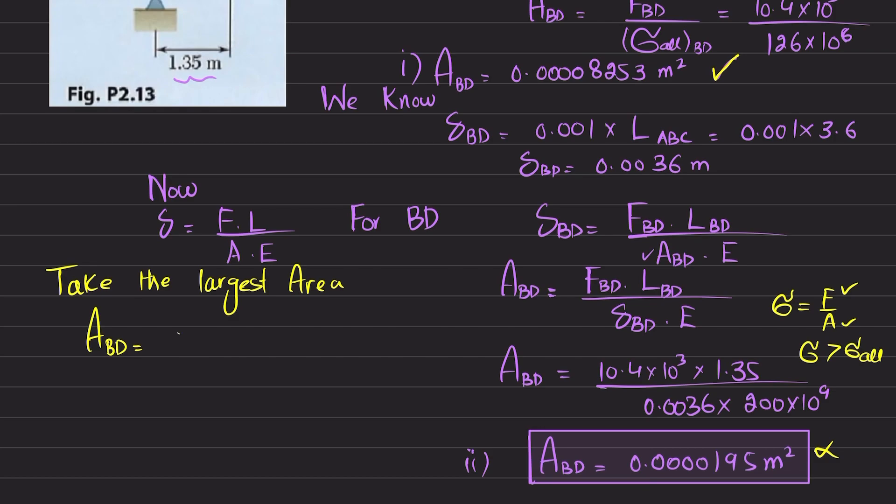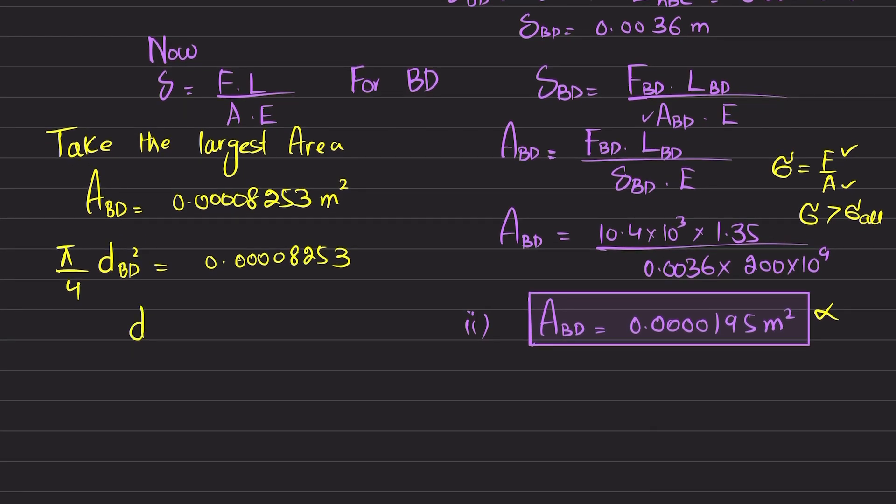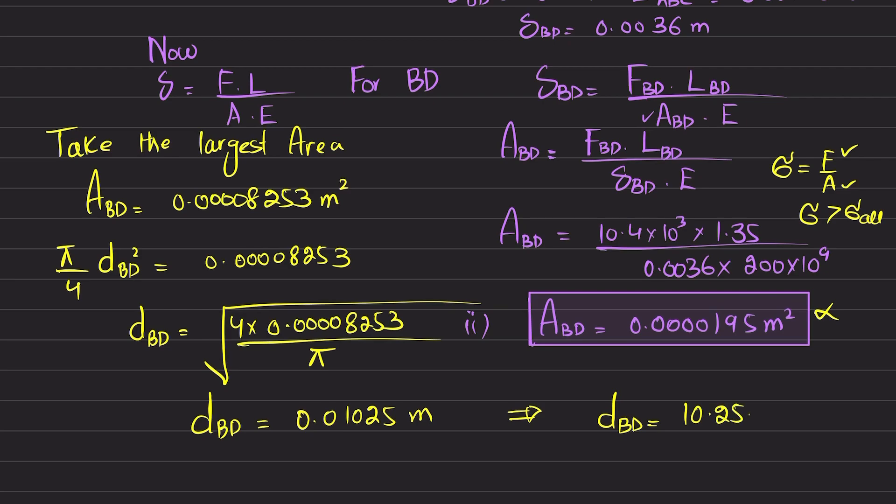So area of BD will be equal to 0.008253 square meter. And we know that area of rod is pi by 4 D BD square, and that is 0.008253. And from here, you will get diameter of BD will be equal to 4 times 0.008253 divided by pi. And we will take the square root. So when you calculate it, you will get diameter of rod BD comes out to be 0.01025 meter, or simply in term of millimeter, diameter of rod BD will be equal to 10.25 millimeter.